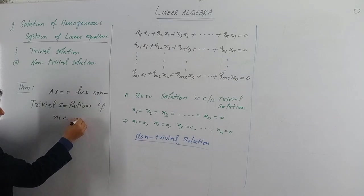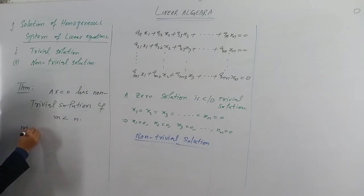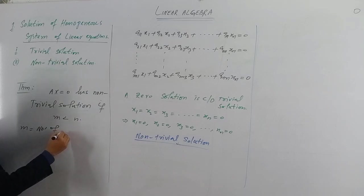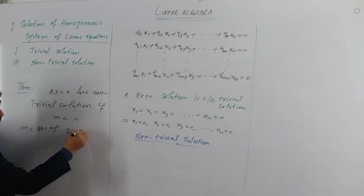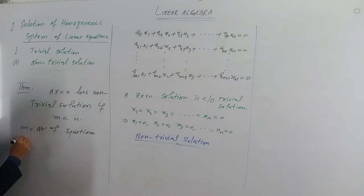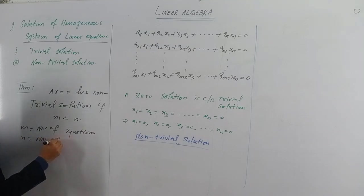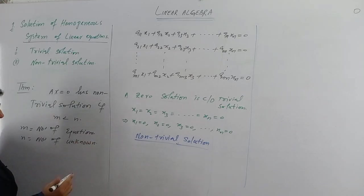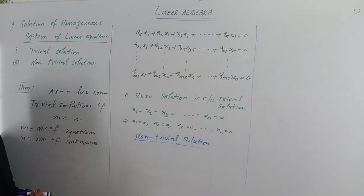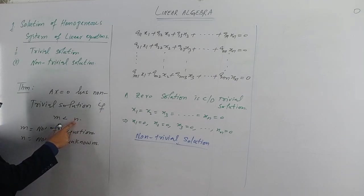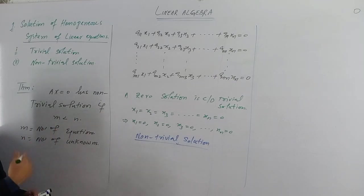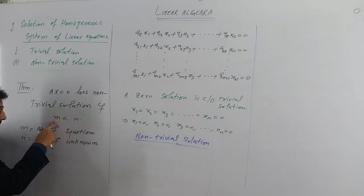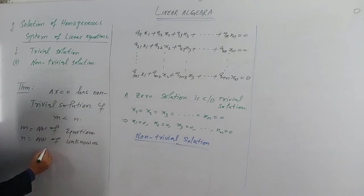This holds if m is less than n, where m is the number of equations and n is the number of unknowns — that is, the variables x, y, z or x1, x2, x3, x4. If the number of equations is less than the number of unknowns, for example two equations with three or more variables, then a non-trivial solution always exists.